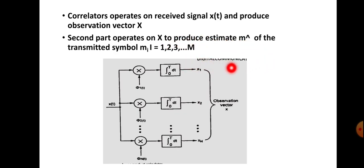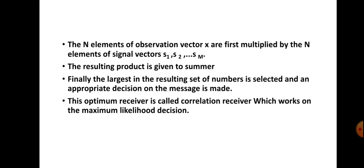The N elements of the observation vector x are first multiplied by the N elements of the signal vector s, from s1 to s-m.